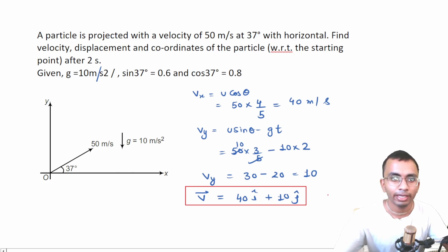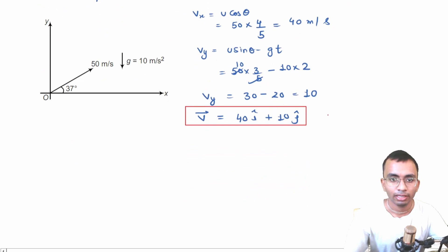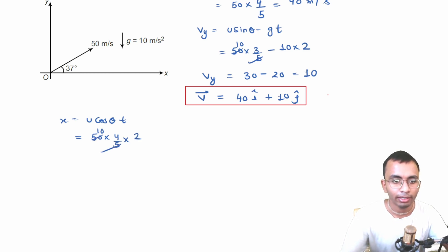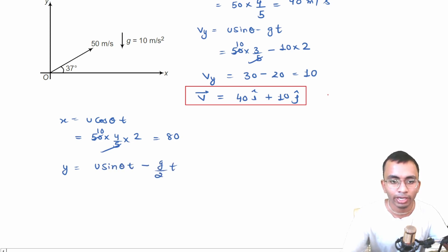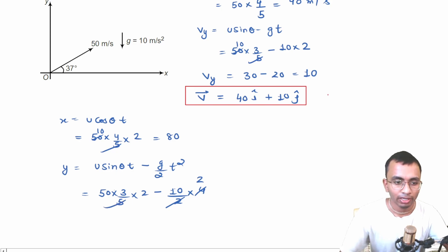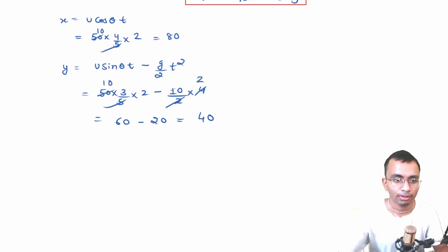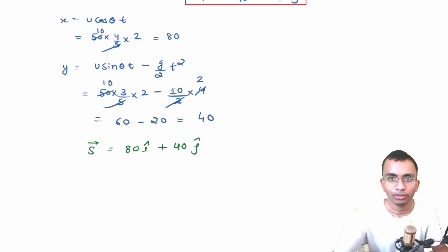Next we find displacement and coordinates. x-coordinate: x = u cos theta · t = 50 × (4/5) × 2 = 80 meters. y-coordinate: y = u sin theta · t minus (g/2)·t² = 50 × (3/5) × 2 minus (10/2) × 4 = 60 minus 20 = 40 meters. So x = 80 m and y = 40 m. The displacement vector s = 80 i-cap + 40 j-cap. We got all our answers.